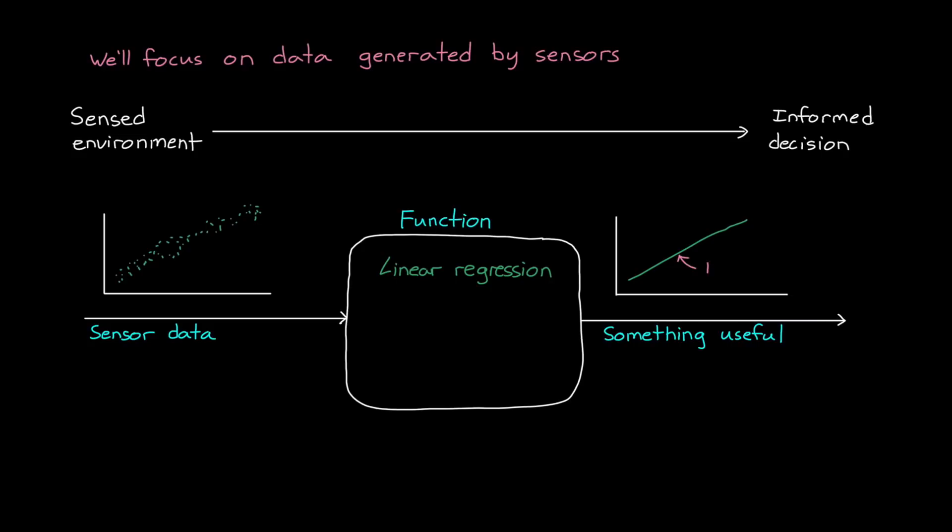And we have tons of methods that we can use to find patterns in sensor data. For two simple examples, we might just run a linear regression to determine how the data is trending over time, or we may look for when the signal drops below some threshold to indicate that whatever the sensor was observing is no longer in view.